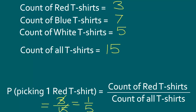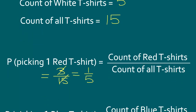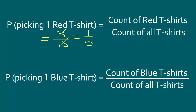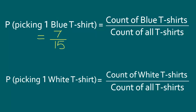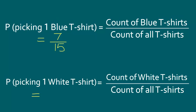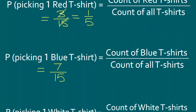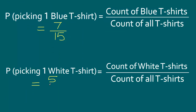What is the probability that we pick a blue t-shirt? We have seven blue t-shirts and there are a total of fifteen t-shirts. So the probability of picking a blue t-shirt is seven divided by fifteen. And similarly, the probability of picking a white t-shirt is five divided by fifteen, or simply one over three.